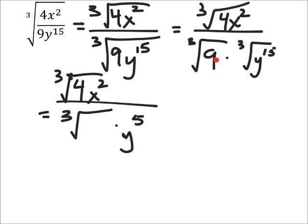Right up here. So 9 I can split up into 3 and 3. Three times three. Right now I need a triple, and right now I've only got two, a pair of threes. So what else do I need in the denominator?